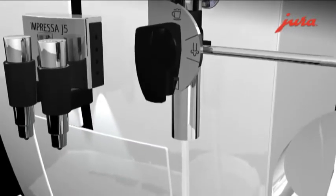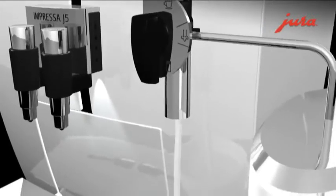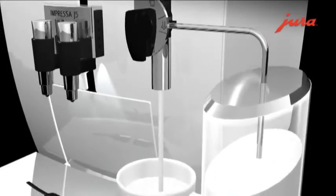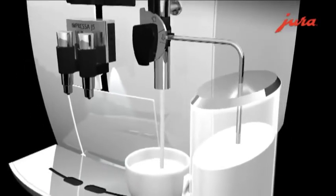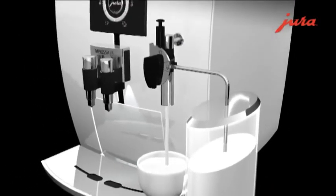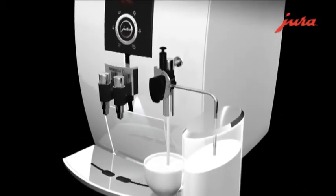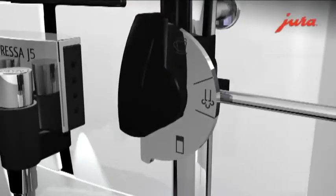Hot milk position. In this position, no more air is delivered to the cappuccino frother. The milk is heated up but not frothed. The hot milk is dispensed from the cappuccino frother into the waiting cup.